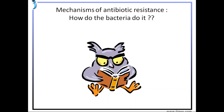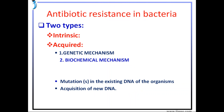Broadly, antibiotic resistance in bacteria is classified into two types: intrinsic and acquired. In acquired resistance, there are again two subtypes — genetic mechanism and biochemical mechanism.